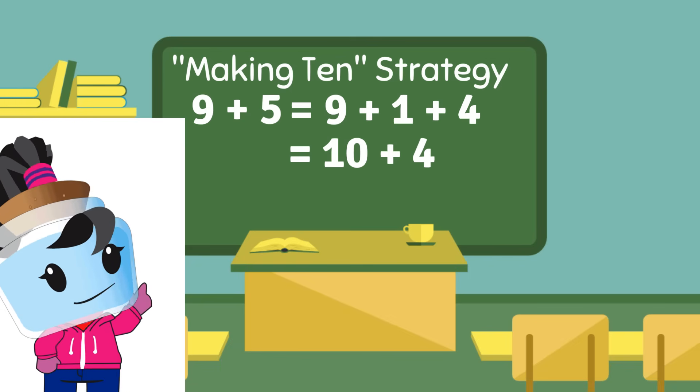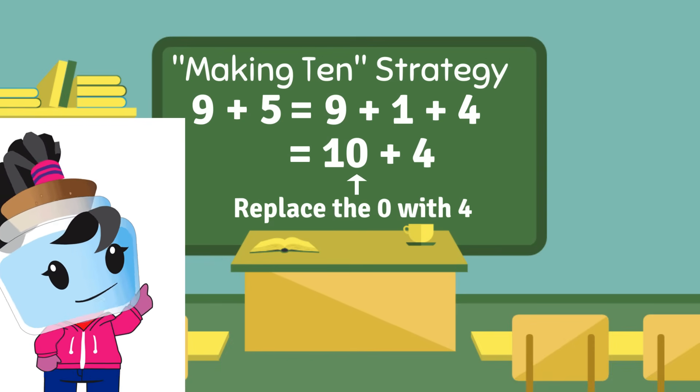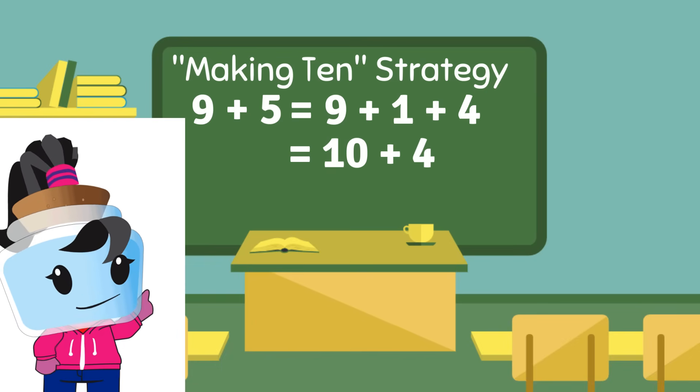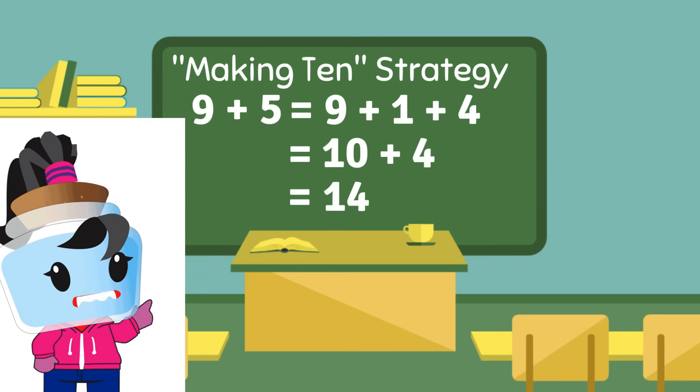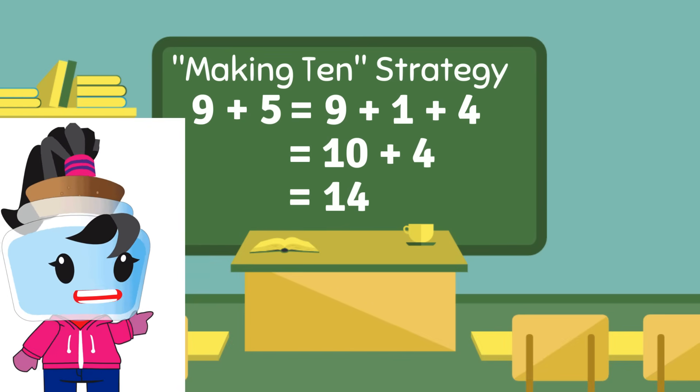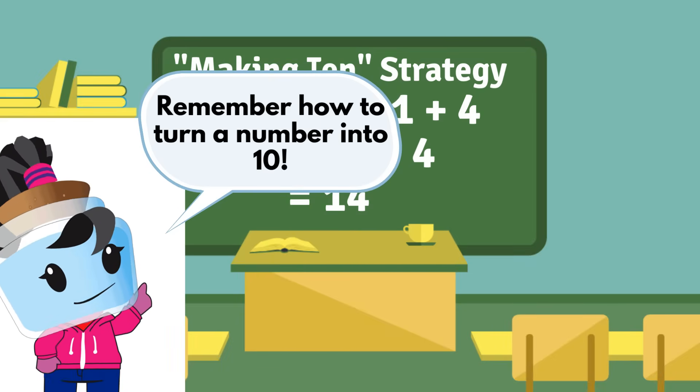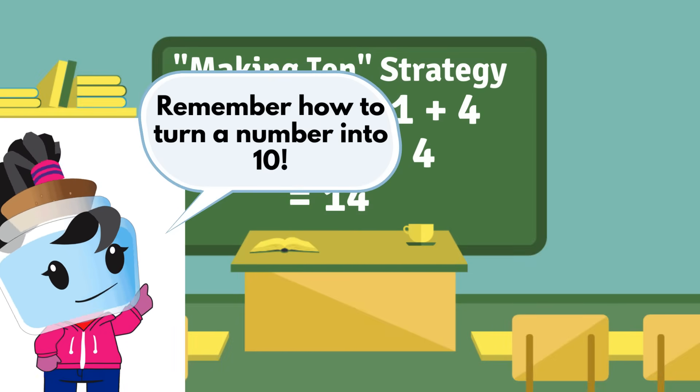Now here's the easy part. When adding one-digit values to 10, we simply replace the zero with the value. So now we have 10 plus 4 equals 14. This trick is easy to use as long as you can turn one of the values into 10. Let's practice.